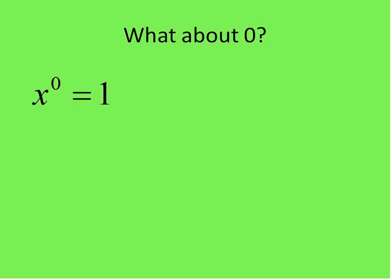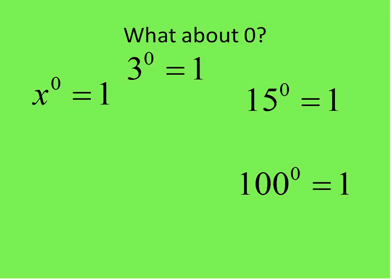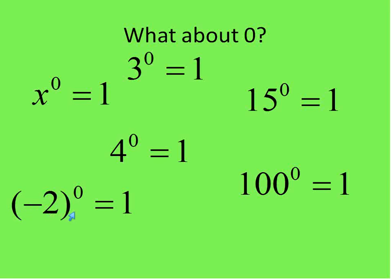The next thing I want to talk about is zeros. When you raise something to the power of 0, it is equal to 1 — that's always the case. It doesn't matter what number: 15 to the power of 0, 3 to the power of 0, 100 to the power of 0, 4 to the power of 0, even negative 2 in parentheses to the power of 0 — all equal 1. Any number raised to the power of 0 gives you 1.